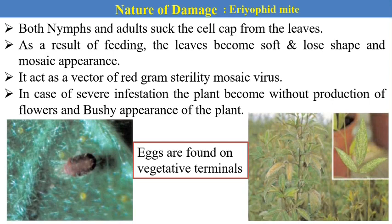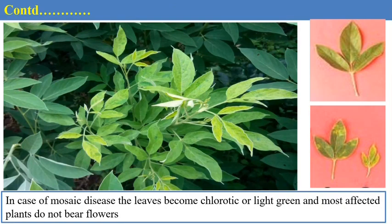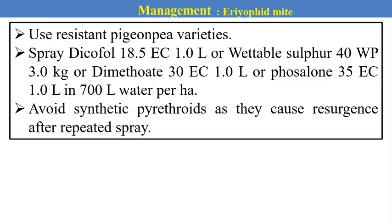In case of severe infestation, the plant becomes without flower production and a bushy appearance of the plant occurs. In the picture, we can see the mosaic disease — the plant loses color, becomes chlorotic with light green coloration, and the most affected plants do not bear flowers. For management practices, we can use acaricides or miticides, but before that we can use resistant varieties. For miticides, we can spray the crop with dicofol or wettable sulfur. An important practice is to avoid synthetic pyrethroids because their continuous use causes resurgence after repeated sprays. Currently available acaricides include spiromesifen and abamectin, which are also used against this pest.